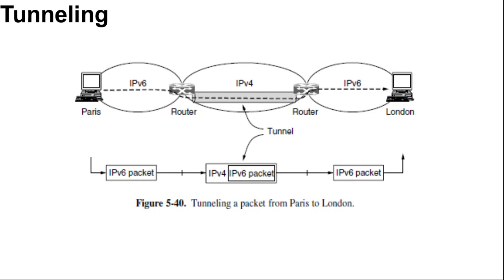When the router gets the IP version 6 packet, it encapsulates the packet with an IP version 4 header addressed to the IP version 4 side of the multi-protocol router that connects to the London IP version 6 network. That router puts the IP version 6 packet inside an IP version 4 packet. When this wrapped packet arrives, the London router removes the original IP version 6 packet and sends it onward to the destination host.